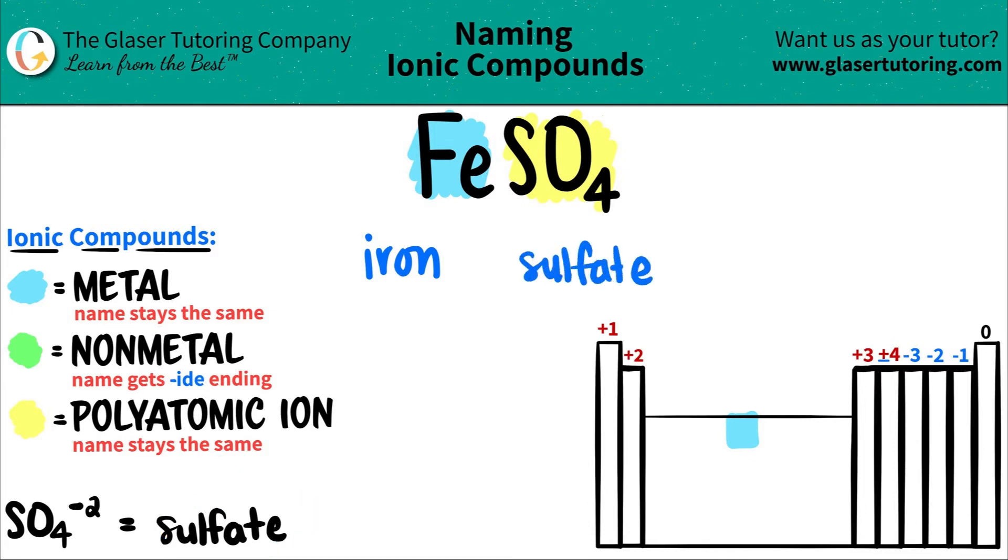Since this is ionic, do I need a Roman numeral? It always goes by the metal. Since iron is a transition metal, I do need a Roman numeral. The majority of transition metals need Roman numerals - there are exceptions, but iron definitely needs one.